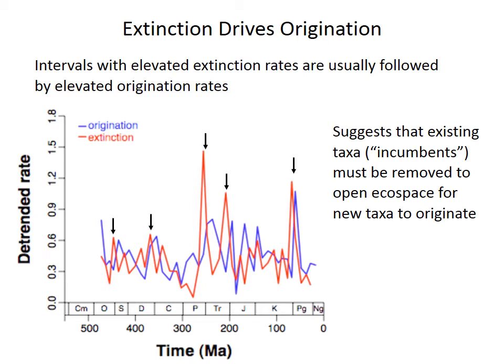Although extinction and origination have both fluctuated considerably over the Phanerozoic, they show an intriguing pattern where times of pronounced extinction are followed right away by intervals with high origination rates, as marked with arrows on the graph. This suggests that new species may be less likely to originate when there are already a lot of existing species, and that incumbent taxa — those already present — need to be removed by extinction to open up opportunities for newly originating species. Species may fulfill a particular ecological role within a community, and other species aren't likely to evolve into that role unless the ecospace becomes vacant by removing the incumbents through extinction.